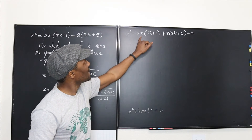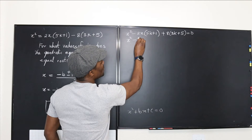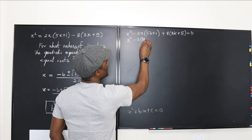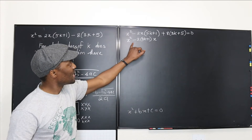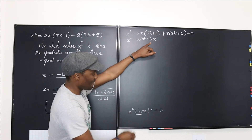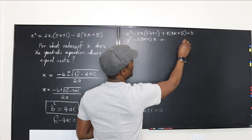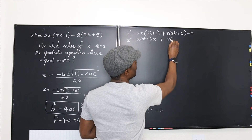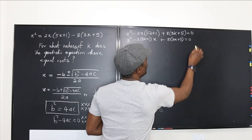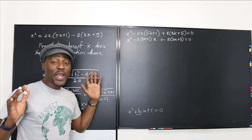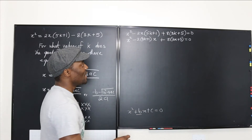So x squared plus the coefficient multiplying x. We rewrite it this way: x² − 2(5k + 1)·x + 8(3k + 5) = 0. Now you can see that −2(5k+1) is representing our b, and 8(3k+5) is our c. Now all we have to do is identify a, b, and c: a = 1 (the leading coefficient), b = −2(5k + 1), and c = 8(3k + 5).